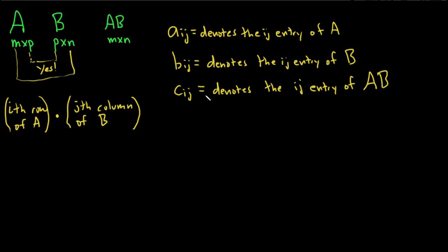But again, to get the ij entry of AB, you multiply the i-th row of A with the j-th column of B. It's like a sum of products. It's basically a dot product.